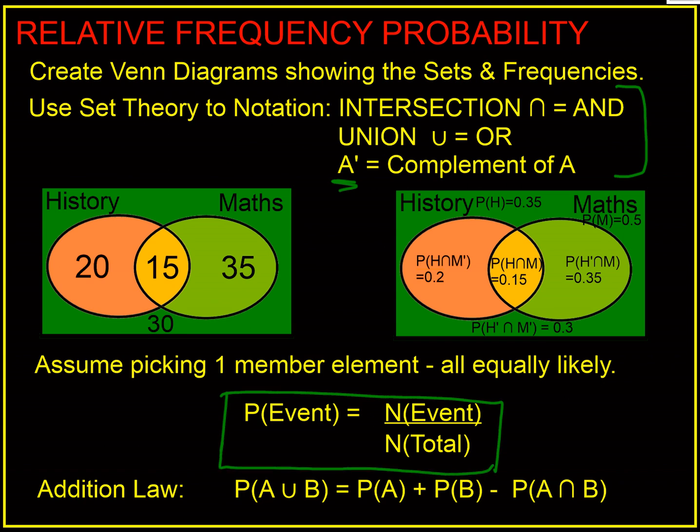In order to calculate the probability, because they're all equally likely, just like taking balls from a bag, the probability of a certain event is the number of items, the students here, that satisfy the event divided by the number in total. Finally we've got our law of addition of probabilities: probability of A or B is the probability of A plus the probability of B, take away the double counted probability of A and B. I hope that's of use.